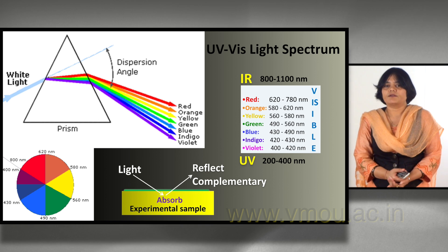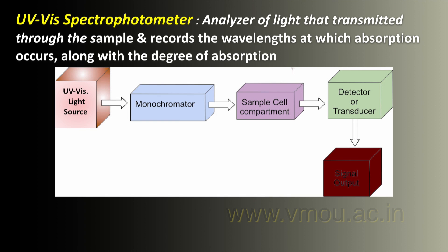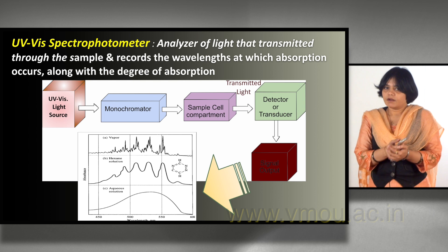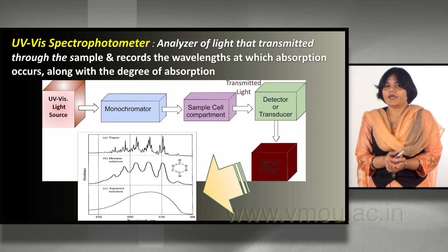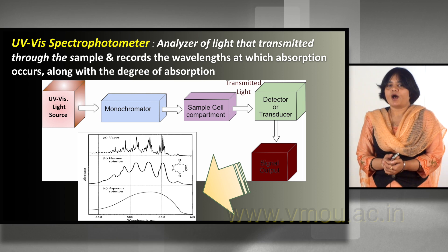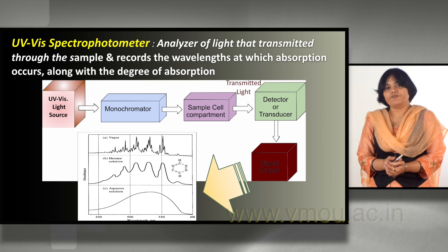During UV-visible spectrum analysis, light from a source is absorbed by the sample material and some light gets reflected. This is a basic diagram of a spectrophotometer, which analyzes light transmitted through a sample. Light from the source passes through a monochromator, then through the sample cell compartment, and the transmitted light is detected, producing a spectrum.